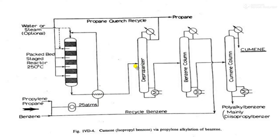Heat integration is used in this cooling step. The cooled vapors are then passed through a depropanizer unit. In the depropanizer, propane is separated from the top and recycled for the quenching operation.